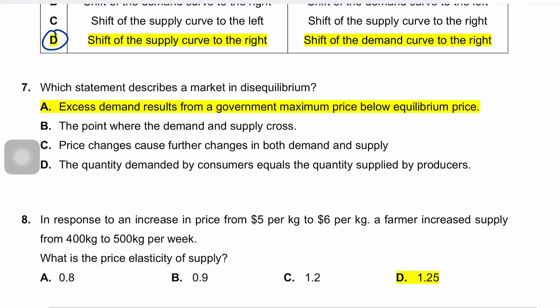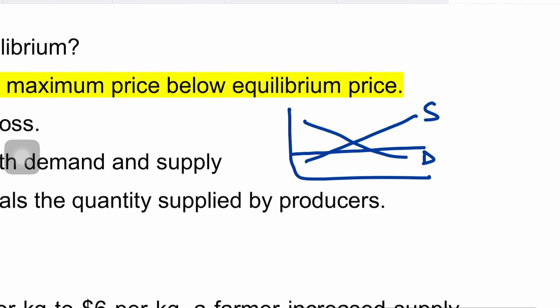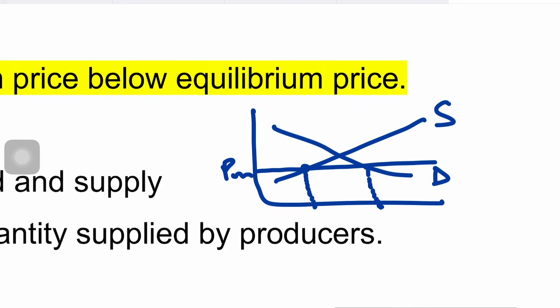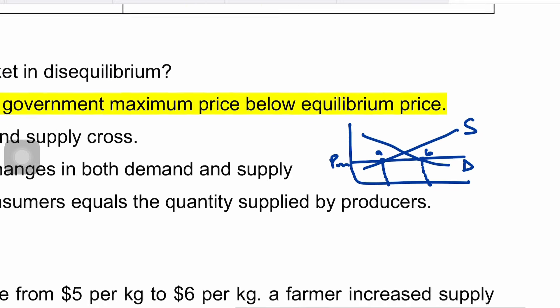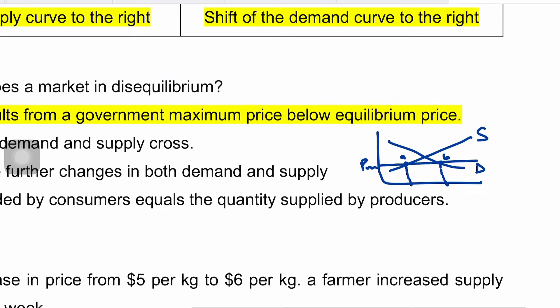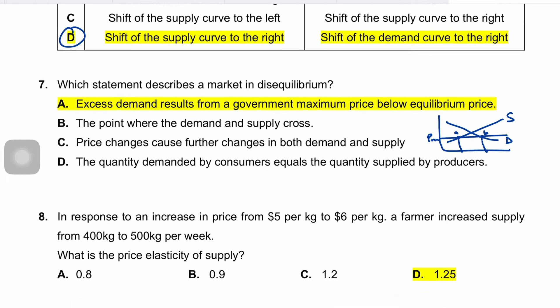Question seven asks which statement describes a market in disequilibrium. Disequilibrium occurs when there is an imbalance between quantity demanded and quantity supplied at a given price. The correct answer is A — excess demand results from a government maximum price set below the equilibrium price. At this price ceiling, quantity supplied is less than quantity demanded, creating a shortage. This is a classic example of disequilibrium caused by price controls.